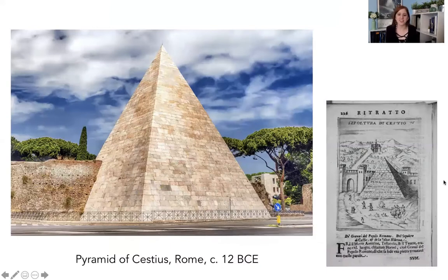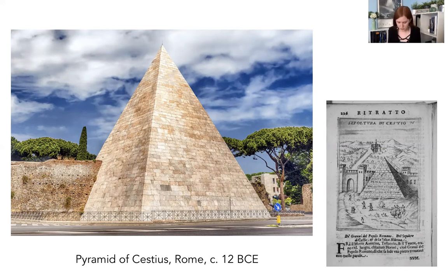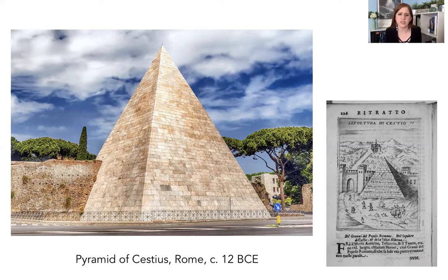Another thing we start seeing is people who are not Augustus also becoming interested in Egypt. One example is the Pyramid of Cestius — a tomb of a prominent person in the city who chose to make it look like a pyramid. It's abutted by a city wall. This is a huge reference to Egypt and the pyramids, showing more multicultural or varied influences in the Roman empire from the places they had conquered.